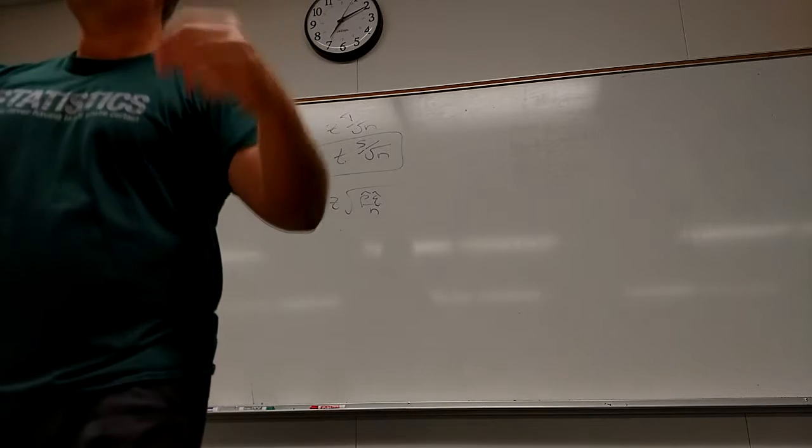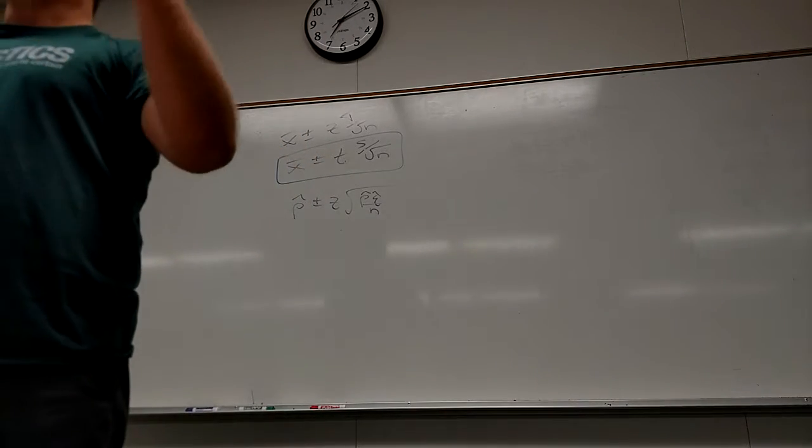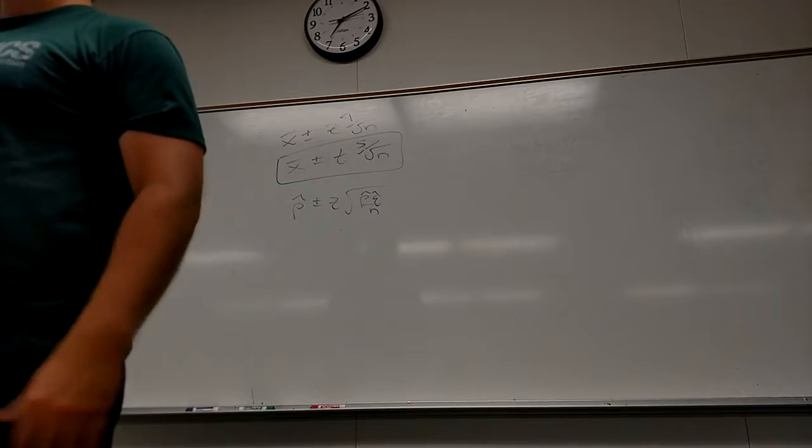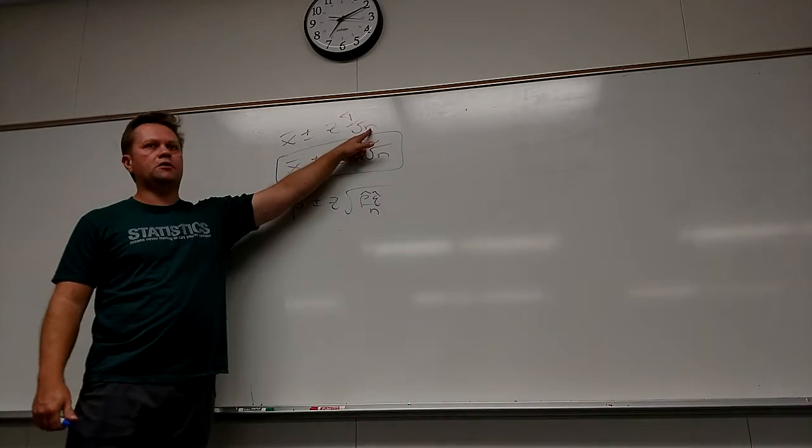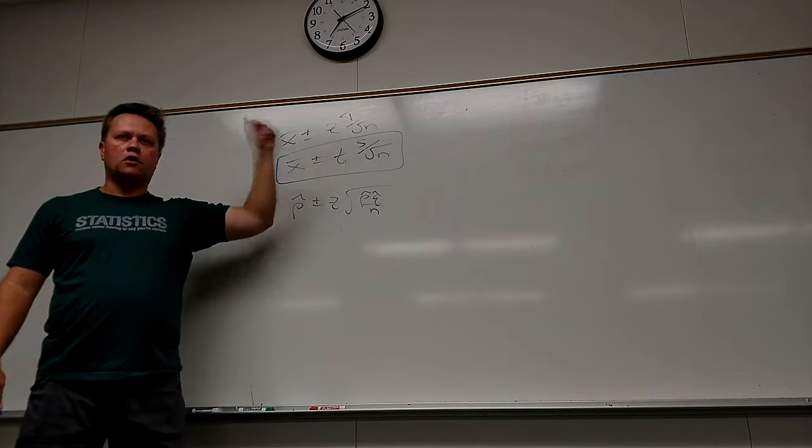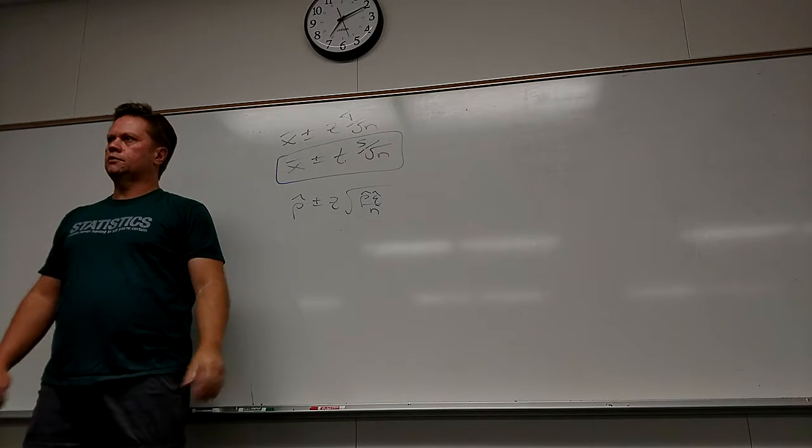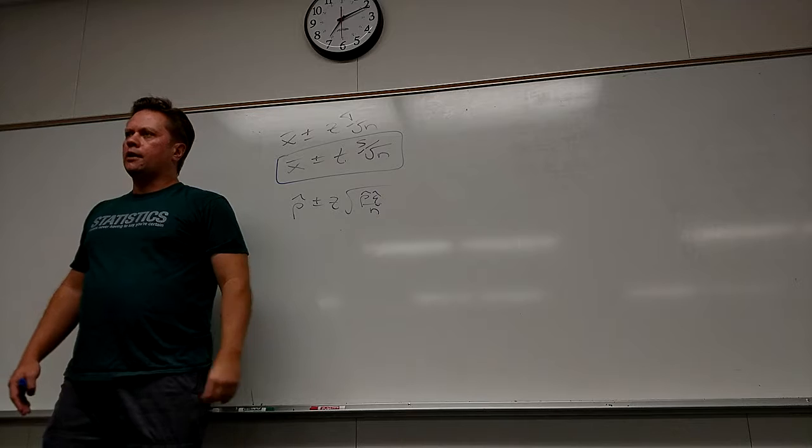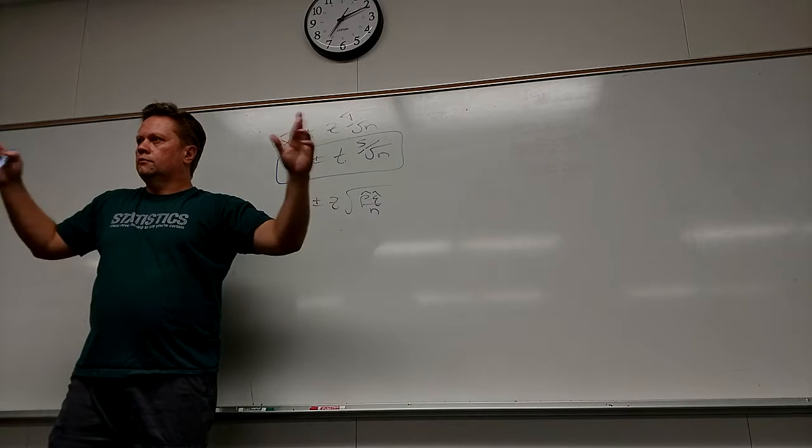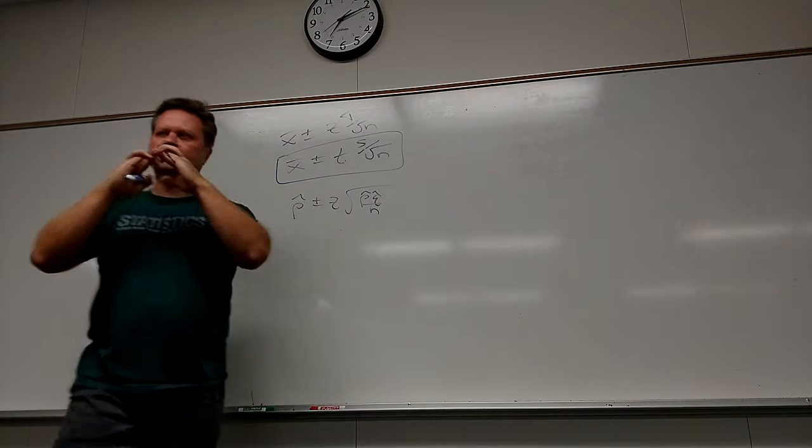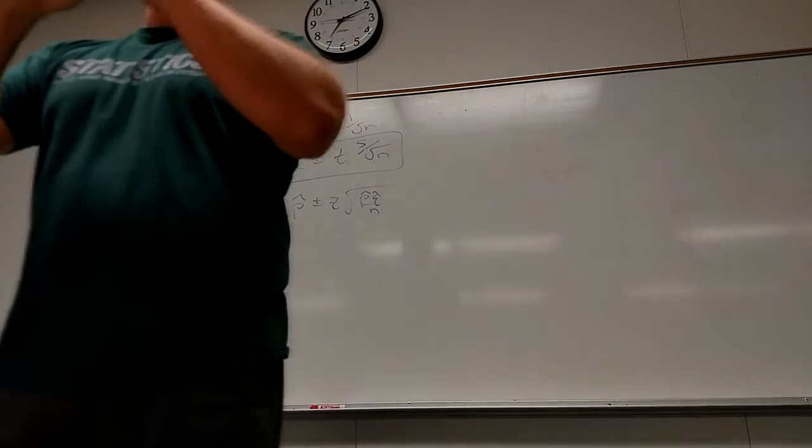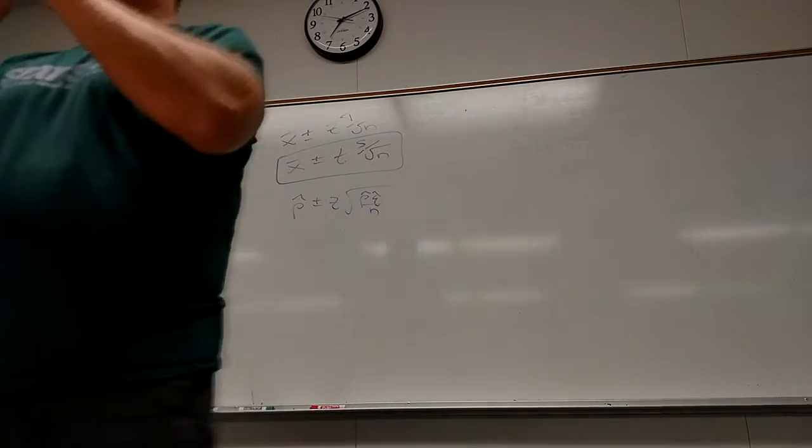So if I want to keep the error the same, but I take a smaller sample, will I be more or less confident in what I find? Less confident. I've taken a smaller sample. Mathematically, if I make this number smaller, I have to make this number smaller. This number being smaller relates to a smaller amount of confidence. But you don't even have to look at it mathematically. You just think, if I take a smaller sample and I keep everything else the same, I'm going to be less confident. That's one of the major themes. The wording there is a little bit freaky, but okay.